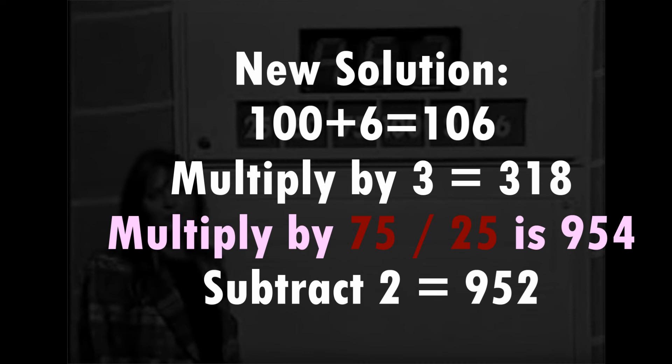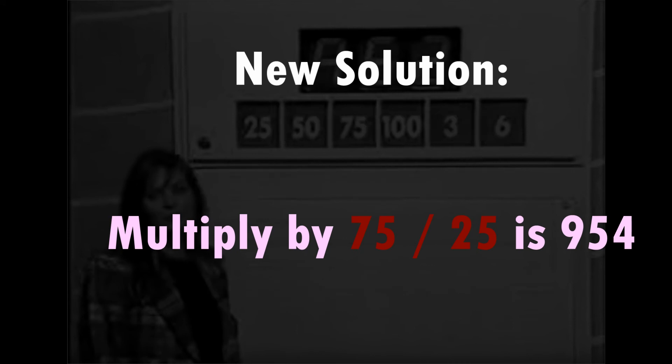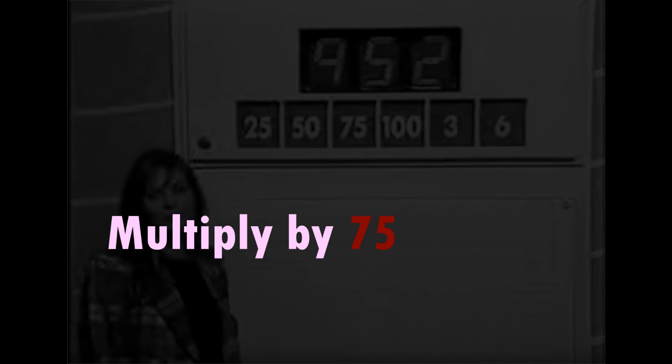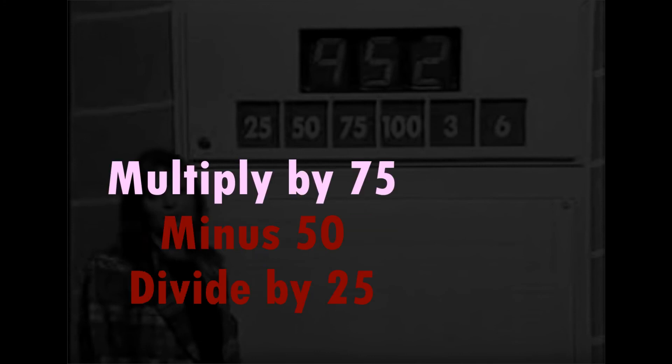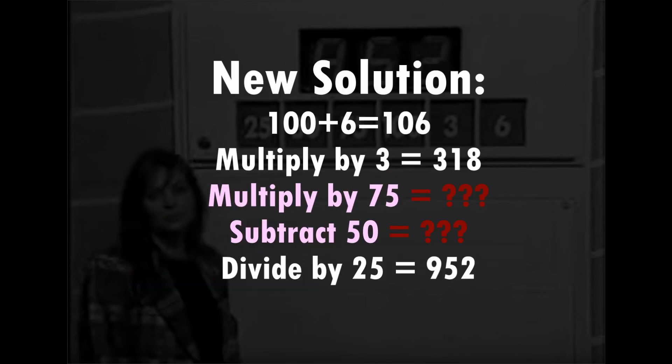But the problem we've got is we need to subtract the 2, and we've already used the 25. So what we're going to do is we're going to go back to our original line, and before we do the division by 25, we're going to take off the 50. Then we divide by 25, and that's our solution.